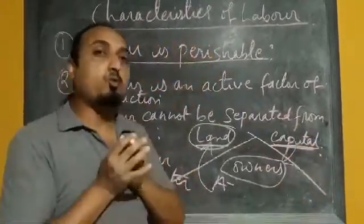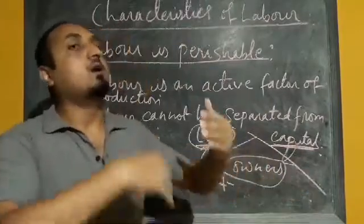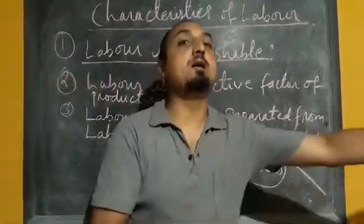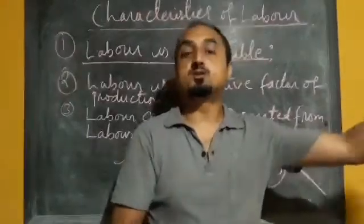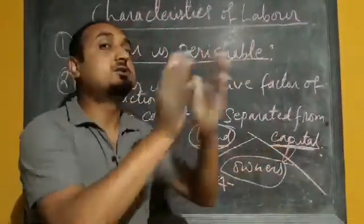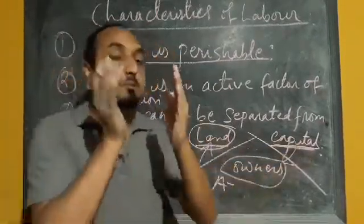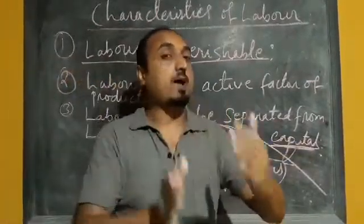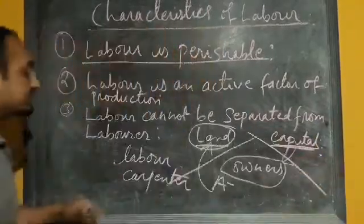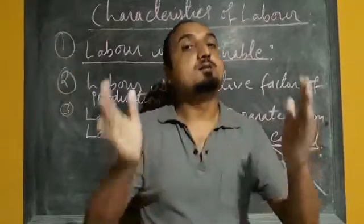The carpenter's talent and the carpenter cannot be separated. If I am the owner of a machine or equipment, I can give that machine to somebody else to use for production purposes — it is possible to separate owner and capital. But that is not possible in the case of labour. Labour and labourer cannot be separated.